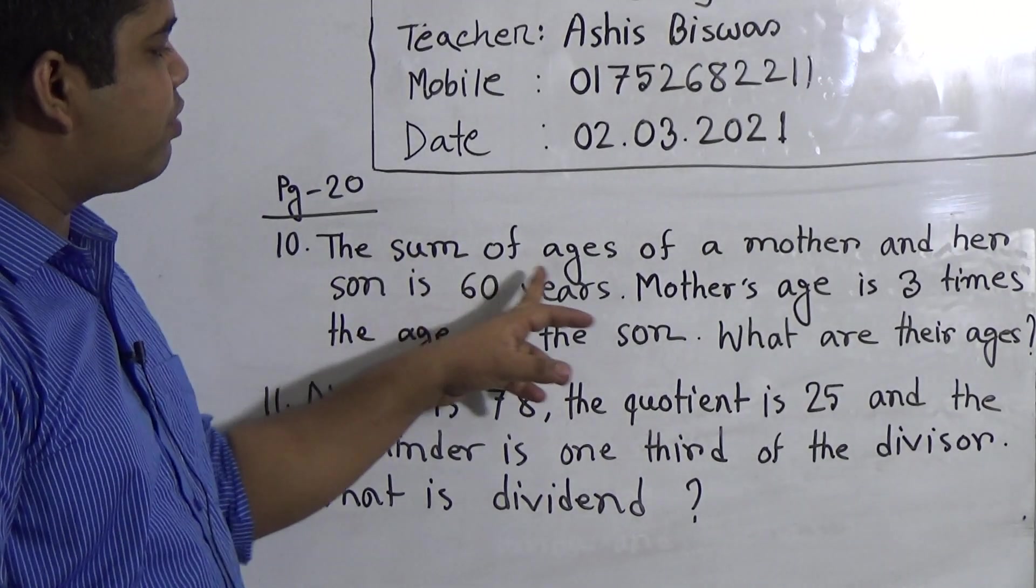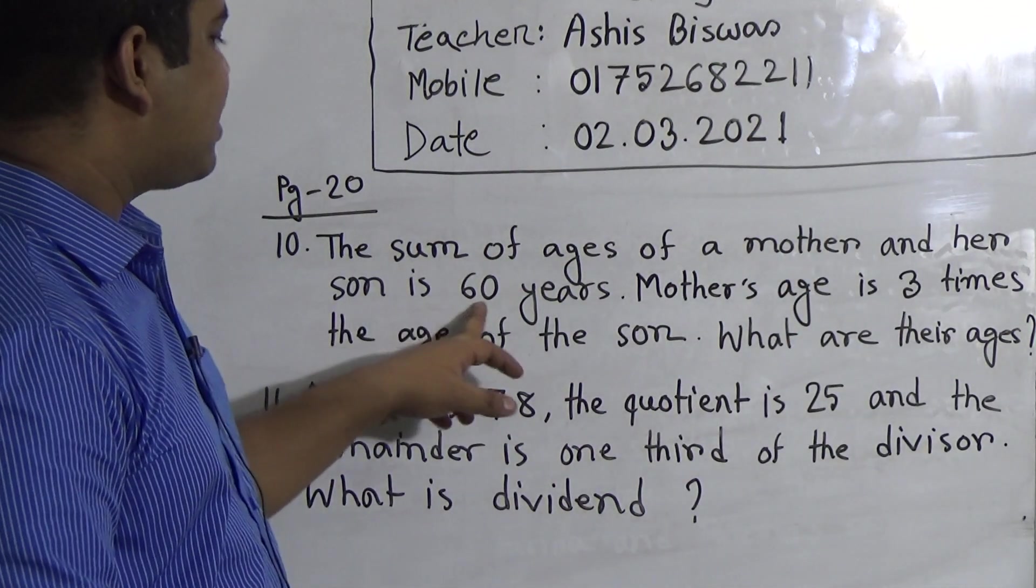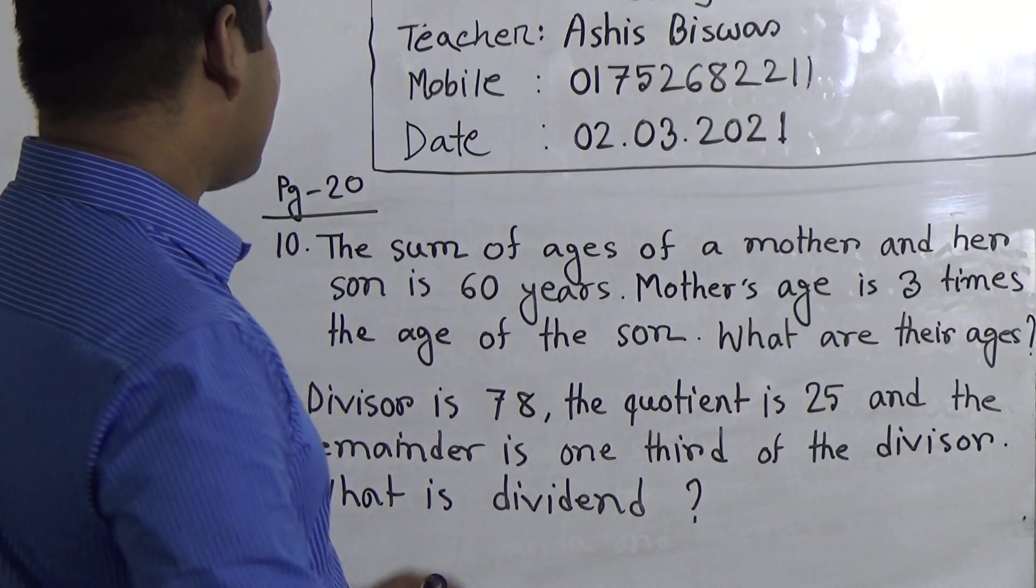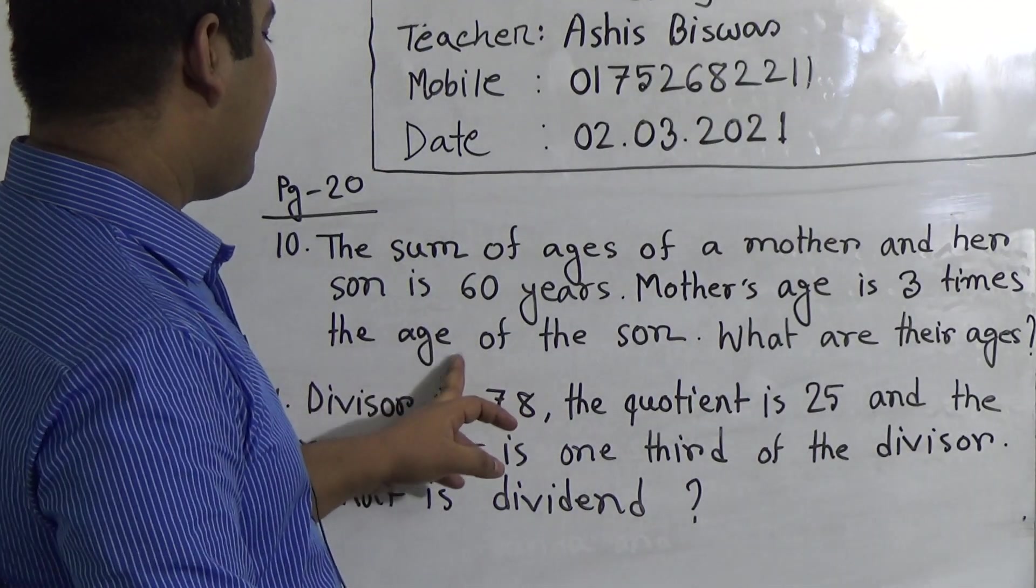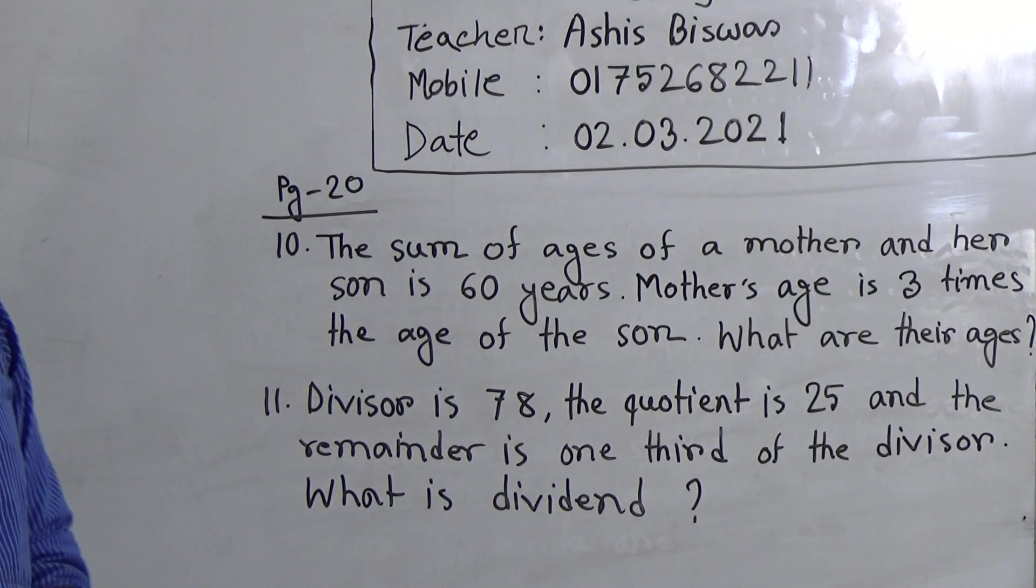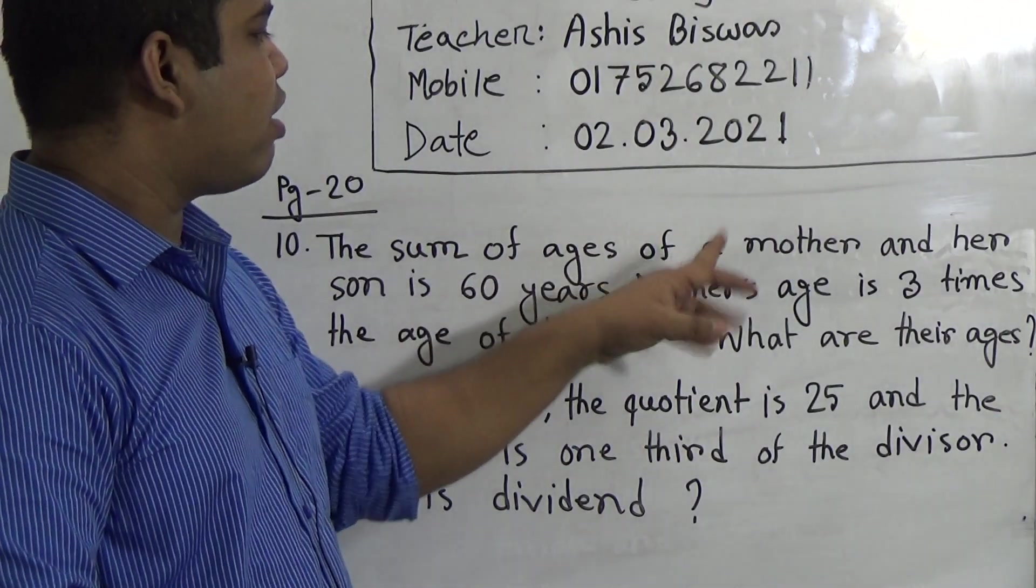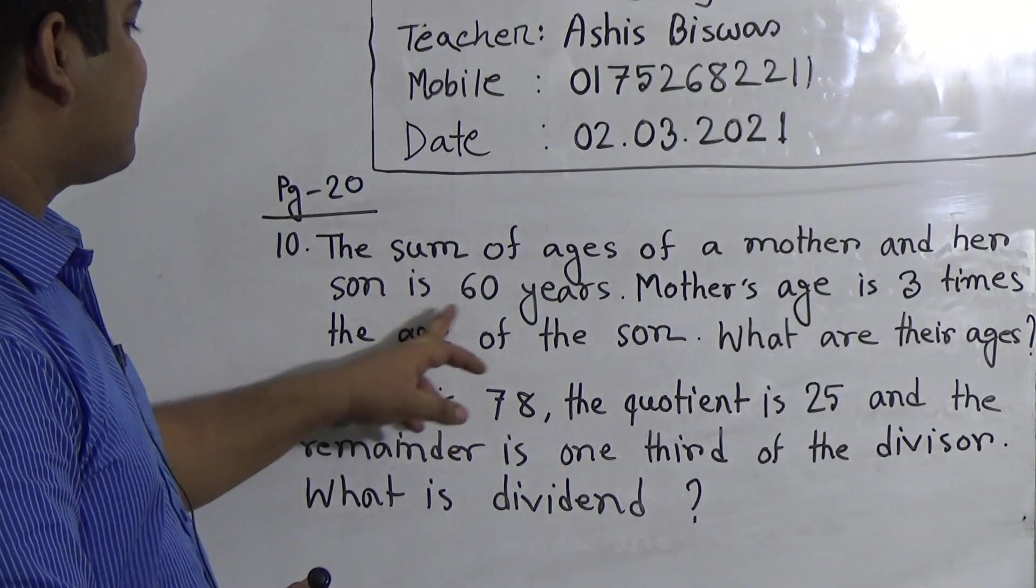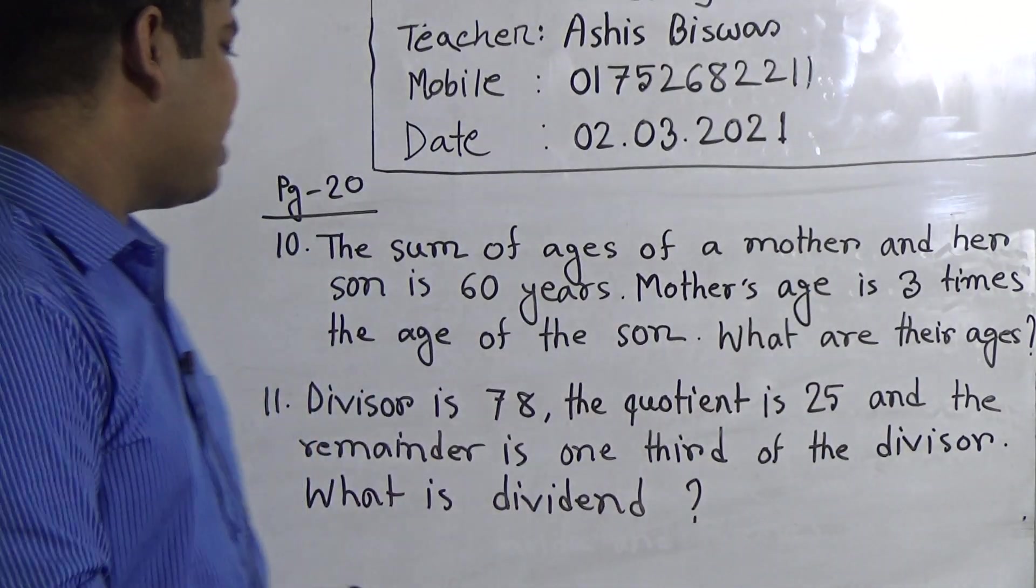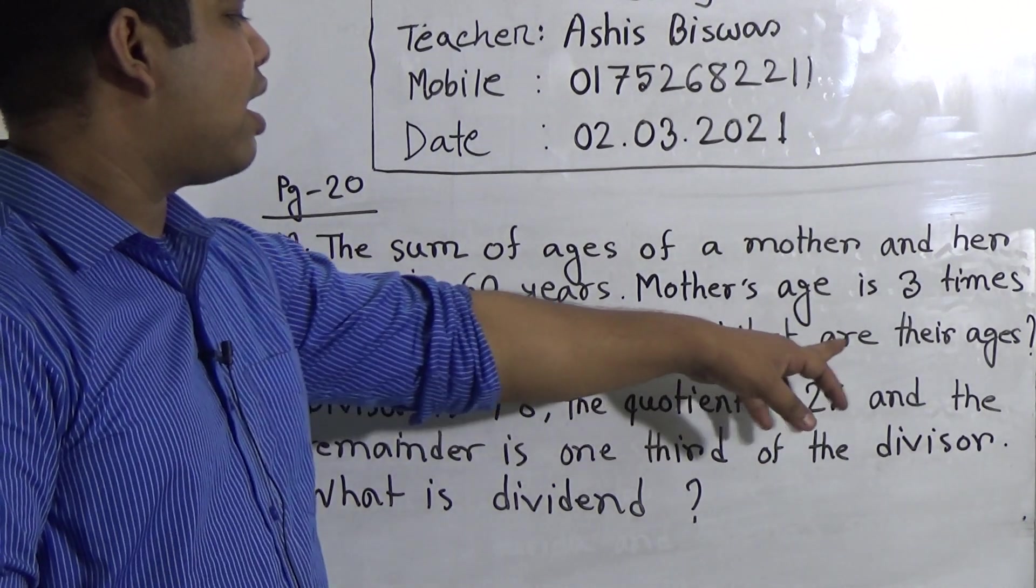The sum of ages of a mother and son is 60 years. Mother's age is three times the age of the son. What are their ages?